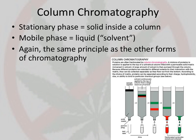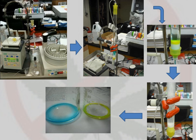Column chromatography is different in the sense that the stationary phase is actually inside a column — usually some type of gel or beads, a solid inside the column. The mobile phase is a liquid solvent, but instead of running up, it runs down. You pour your sample on the top, and then more solution comes and flows down the column — this is called elution, or eluate. We can see here two colors, red and green, that have different affinities for the gel inside the column. The red comes off first, followed by the green.